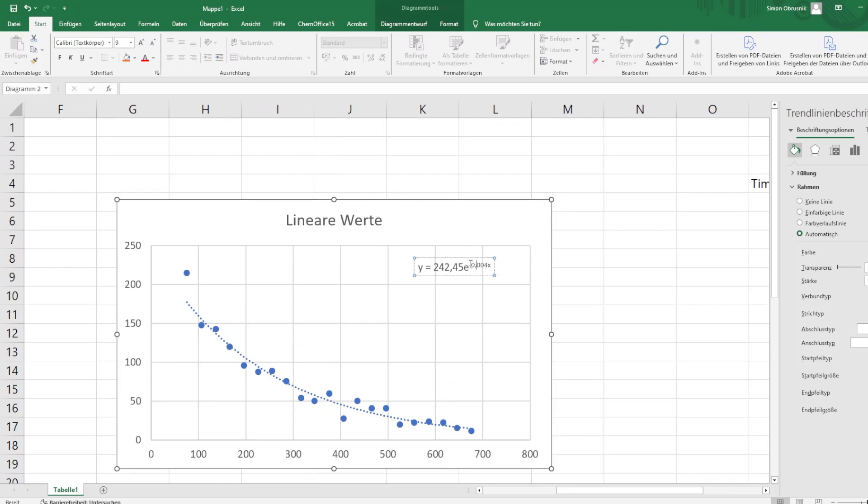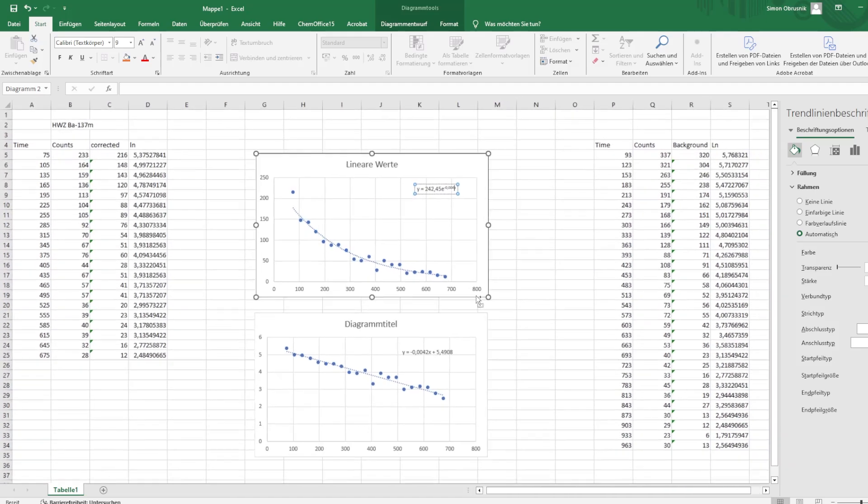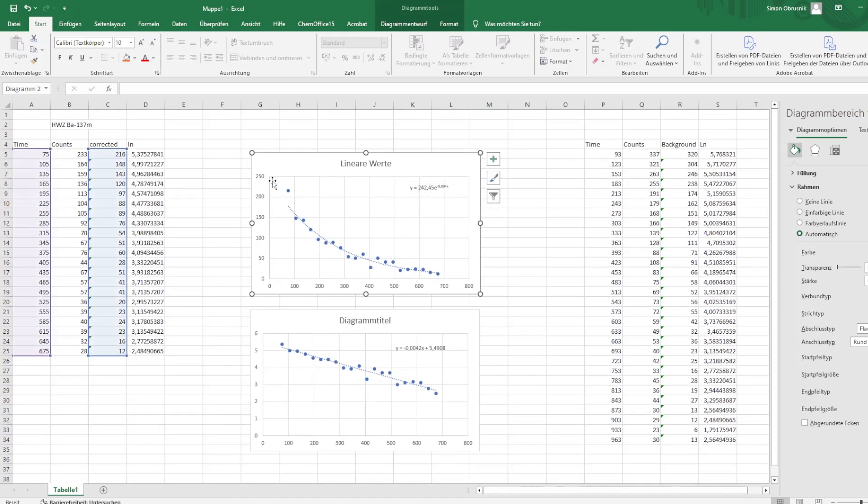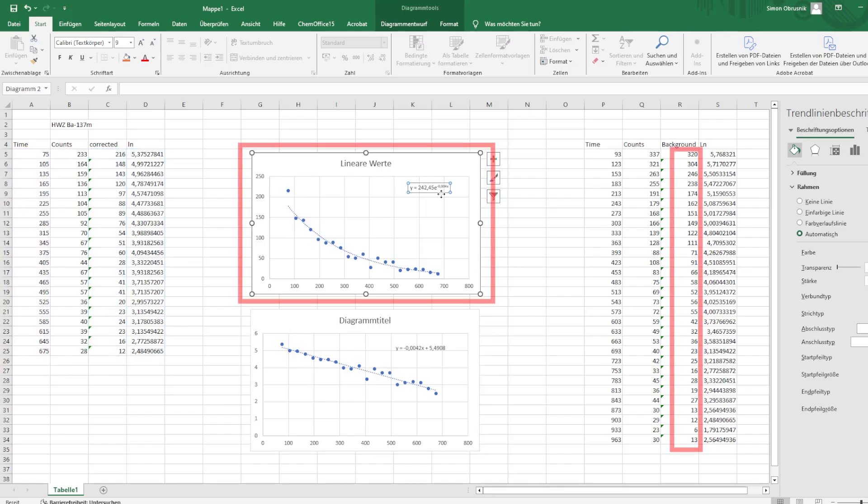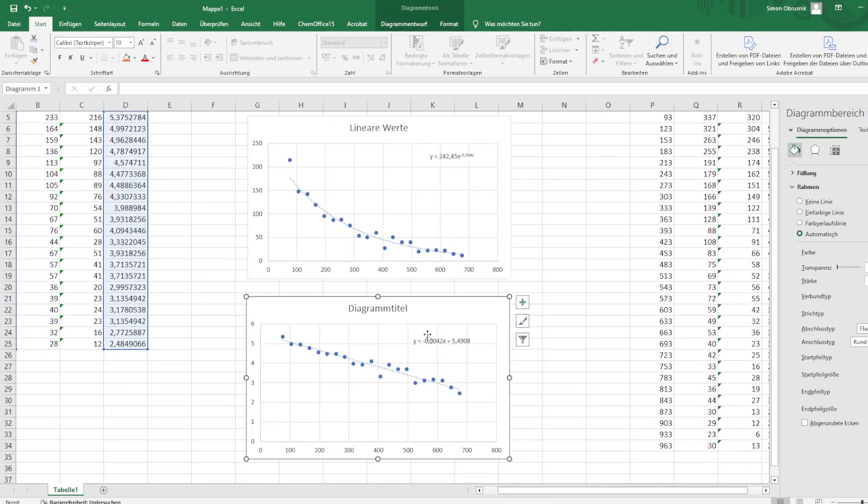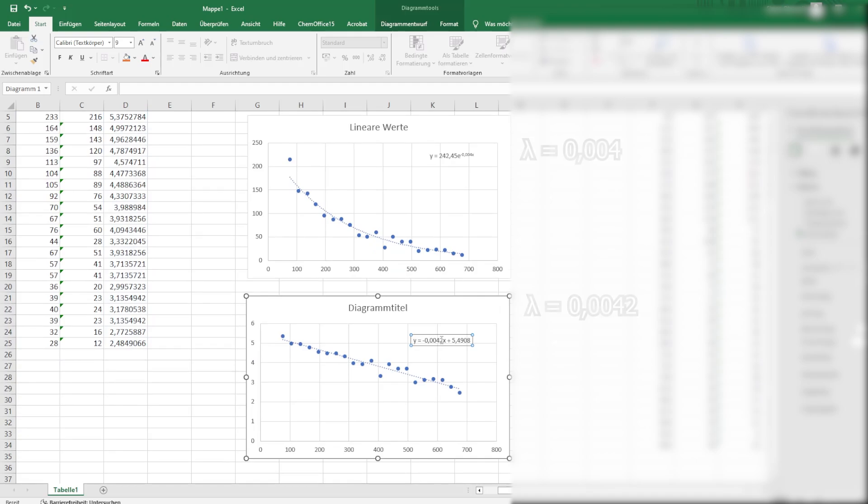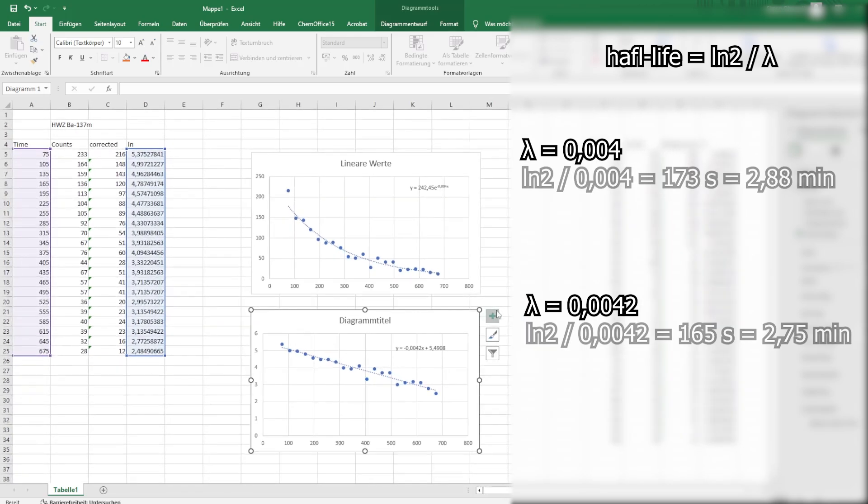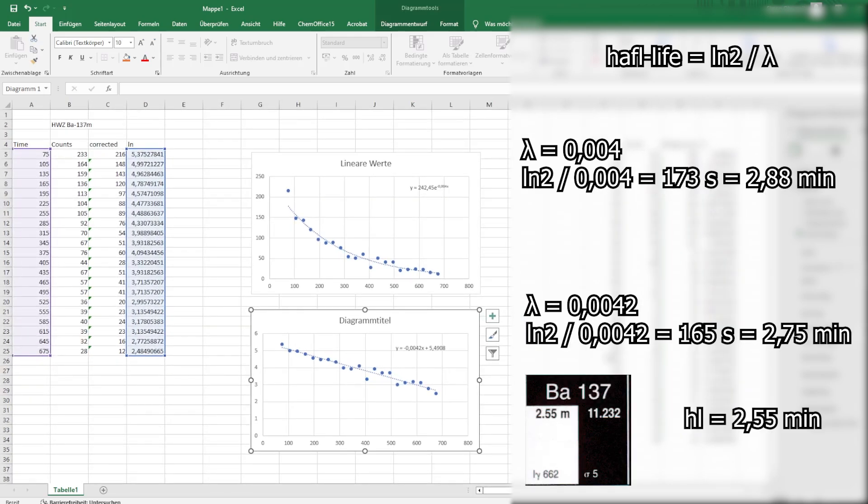Here's a prepared example from the second measurement run. Of course, some of you will use Origin. For those working with Excel, I just wanted to show you why using the logarithmic function is so important. Excel is notoriously bad at fitting exponential curves by default. When you display the linear equation, Excel only shows three decimal places. However, when you plot it logarithmically, the linear fit equation provides an additional decimal place. This number here is your decay constant lambda. Using the formula ln2 divided by lambda, you can calculate the half-life. I did this for both examples and compared the results to the literature. Can you see why this step is crucial?